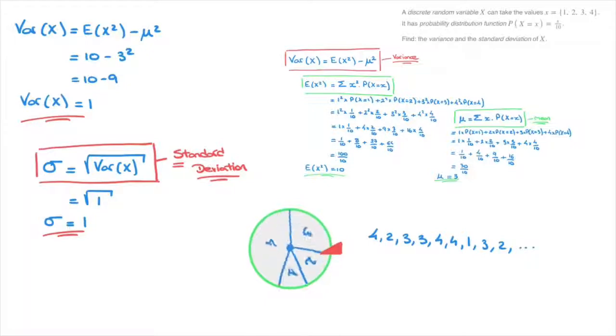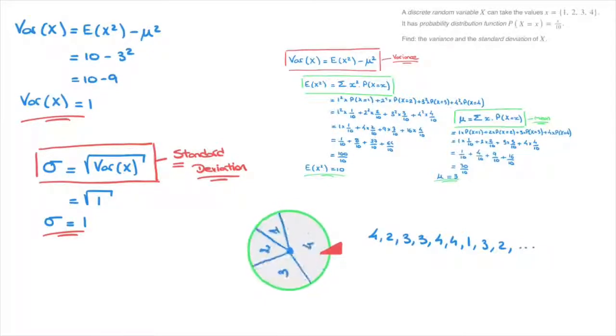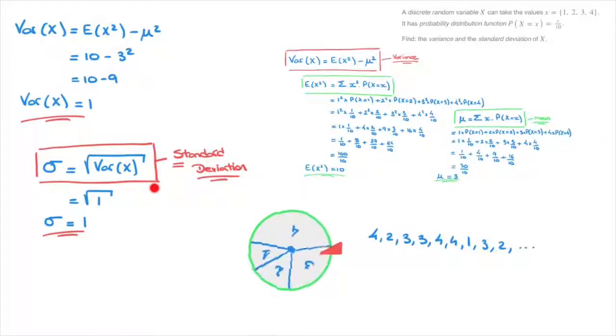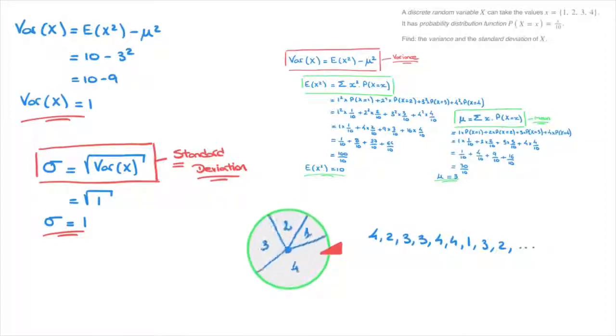The standard deviation sigma = 1 tells us, on average, how far these values would be from that mean of 3. In other words, the standard deviation is a measure of how dispersed X is on either side of the mean. That's it for this tutorial — we've seen how to calculate the variance and standard deviation of a discrete random variable, and how to interpret the result.